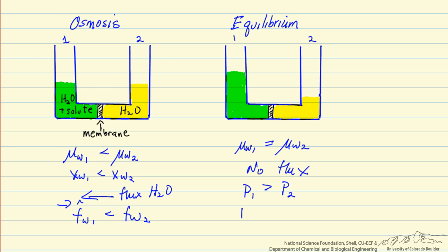Water continues moving from right to left until we reach this equilibrium situation. This delta P is the osmotic pressure — that is the equilibrium situation. In reverse osmosis, what we do is increase the pressure by external means on the left side in order to permeate water to the right side.